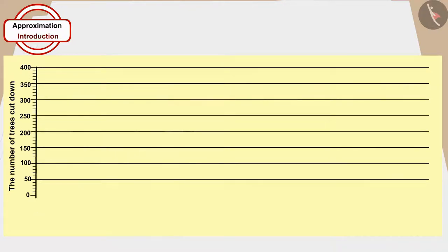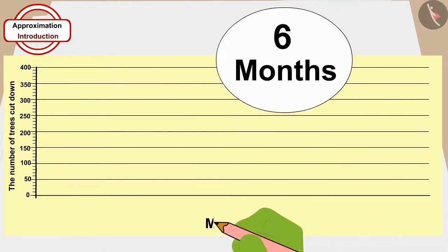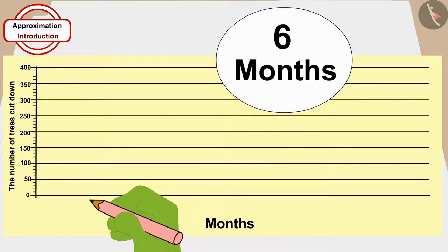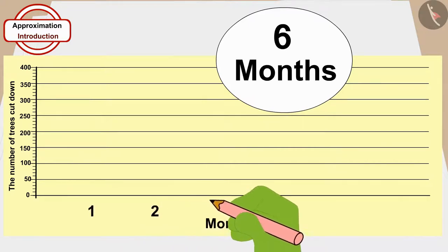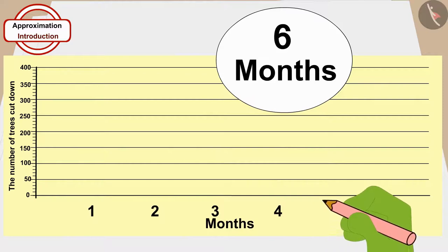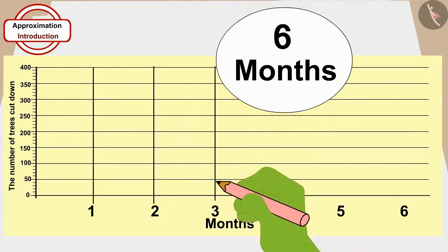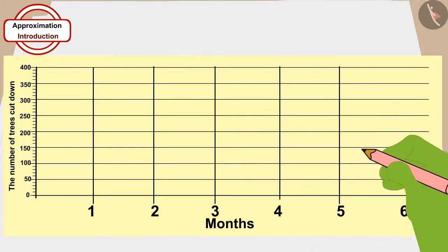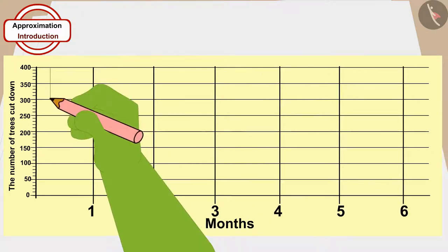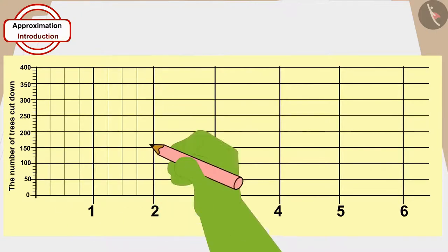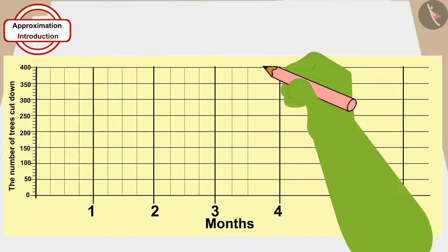Now, at the horizontal line drawn at 0, he drew vertical lines at equal distance numbered 1, 2, to 6 because he was going to count the number of trees that had been cut every month for six months. And finally, he drew three vertical lines at equal distance between the numbered vertical lines.